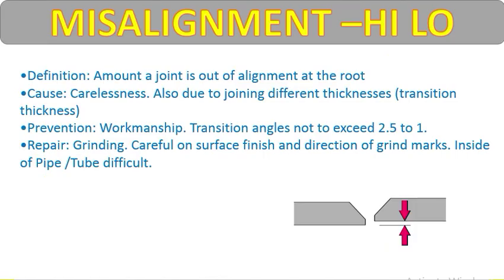First is misalignment, also called high-low. The definition is: the amount the joint is out of alignment at the root. High-low occurs at the root when during fitting, the fitter did not check the proper level. This is carelessness of the fabricator or fitter who is doing the joint.